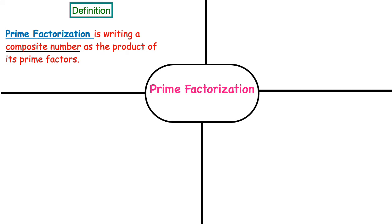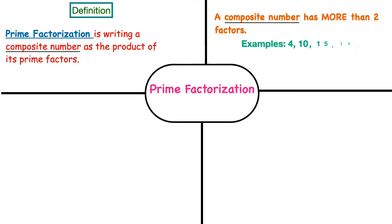Let's review what a composite number is. A composite number has more than two factors. You probably remember from when you were learning about prime numbers you also heard the word composite numbers. If you don't remember what a prime number is, you can go back and watch my previous video on what is a prime number.